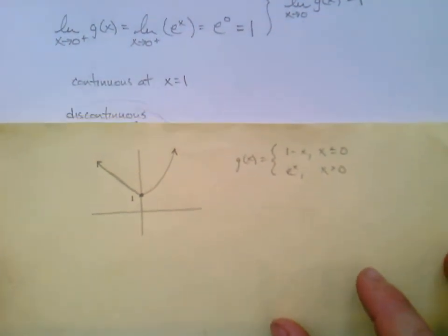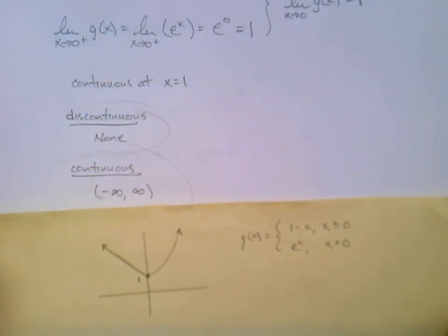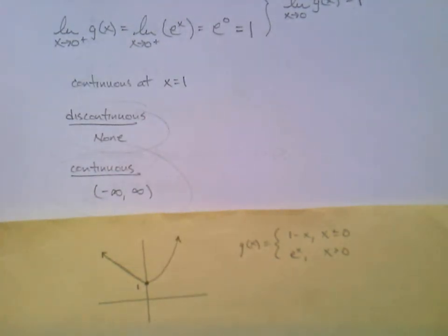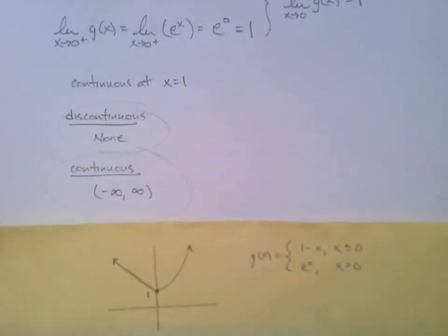Okay, well what does that mean for our answers? We're just going to say it's discontinuous nowhere, or none, which means it's continuous everywhere from negative infinity to infinity. It's always continuous. Okay, let's stop this video here. More to come.